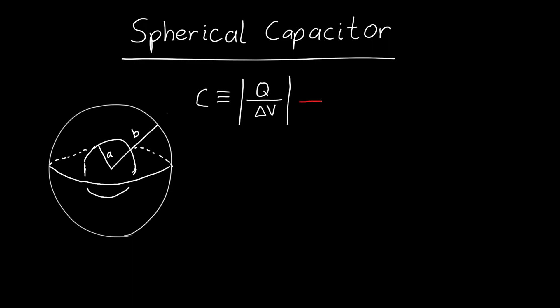To solve this type of problem, we need to assume that there's some charge on one or both of the plates, and then from there we can find the voltage delta V. I'm going to assume that there's a charge of plus Q on the inner plate, or the inner sphere, and there's a charge of minus Q on the outer sphere.